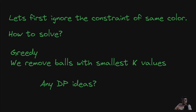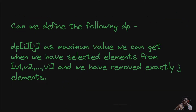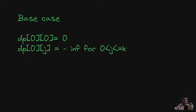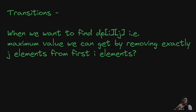Instead of greedy, can we define a DP? Let dp[i][j] be the maximum value we can get when selecting elements from v_1 to v_i and having removed exactly j of these elements. The base case: among the first 0 elements with 0 removed, the maximum value is 0. States where we can't remove 1, 2, 3, or 4 elements from 0 elements are defined as minus infinity.